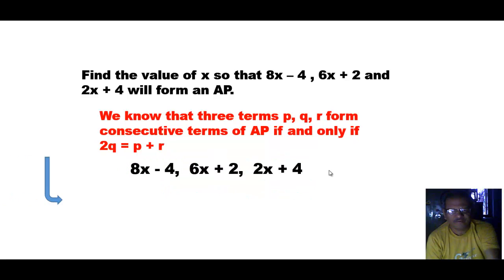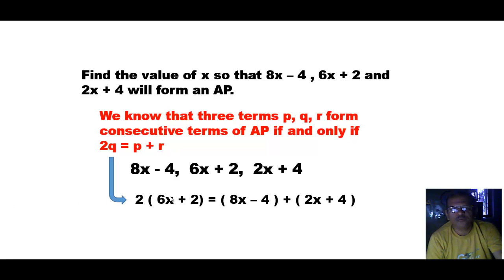And therefore, 2q equals P plus R will be 2 into 6x plus 2 equals 8x minus 4 plus 2x plus 4.